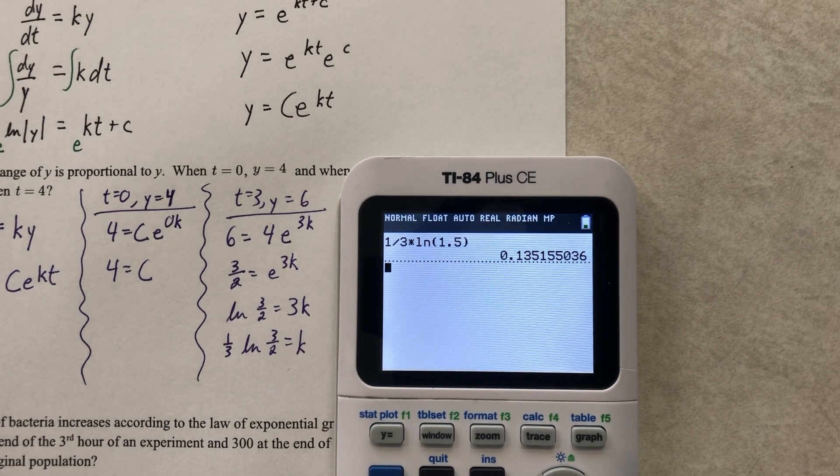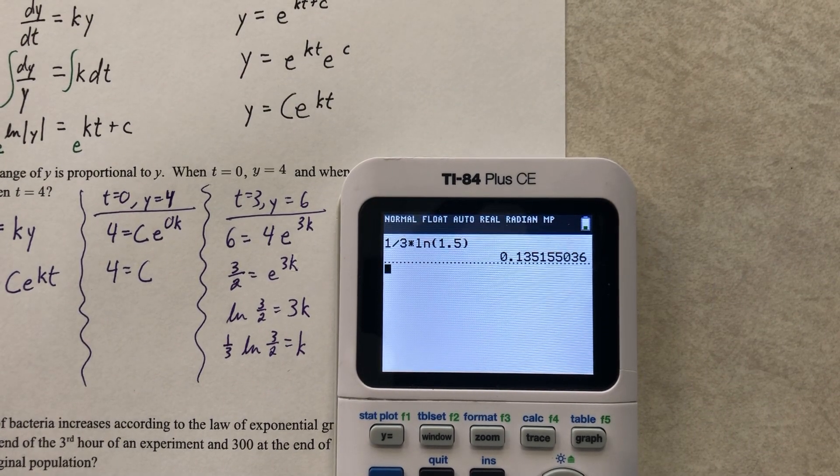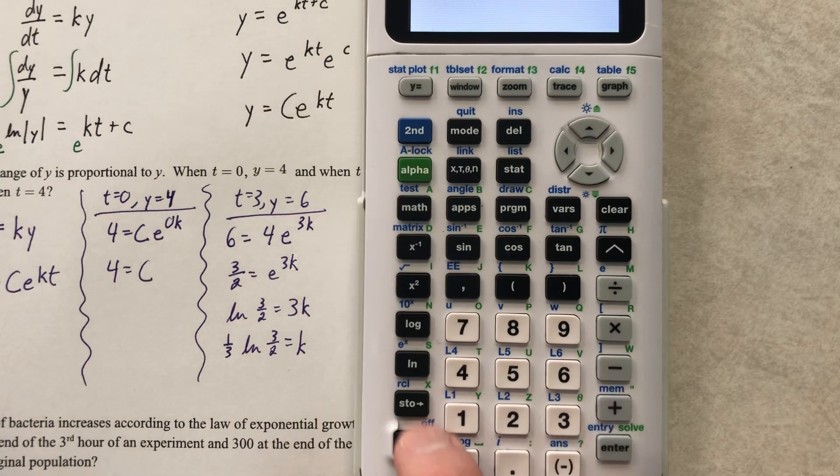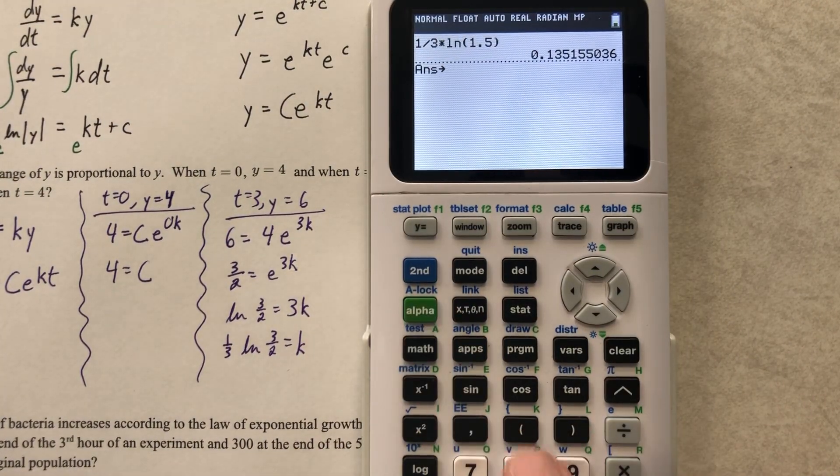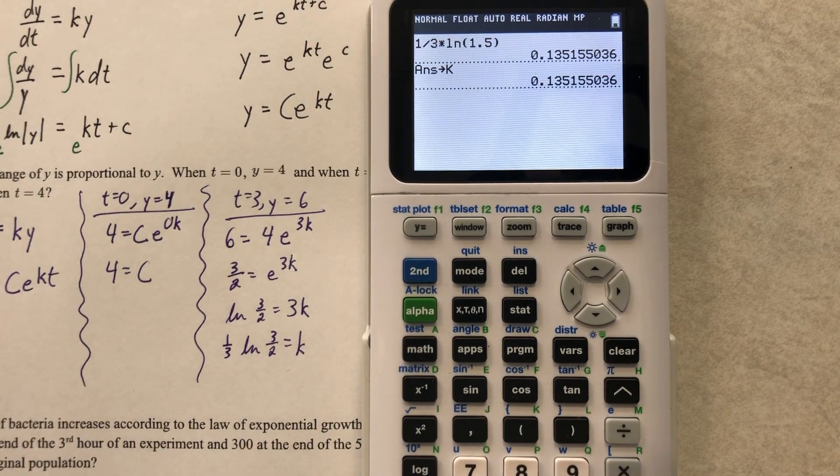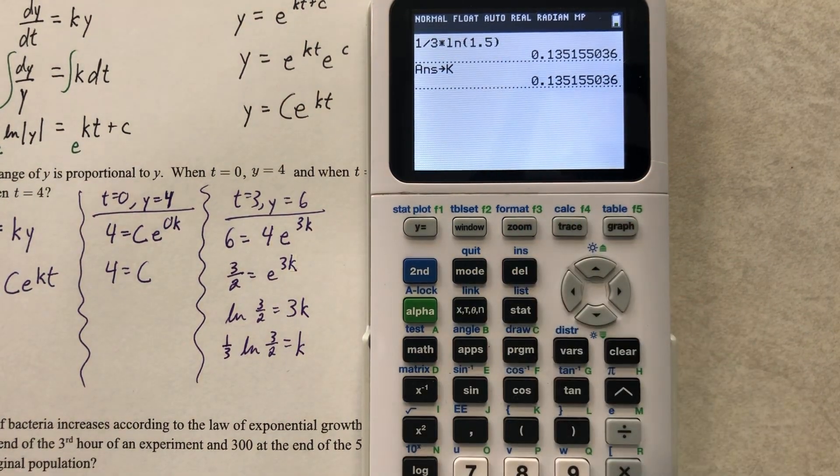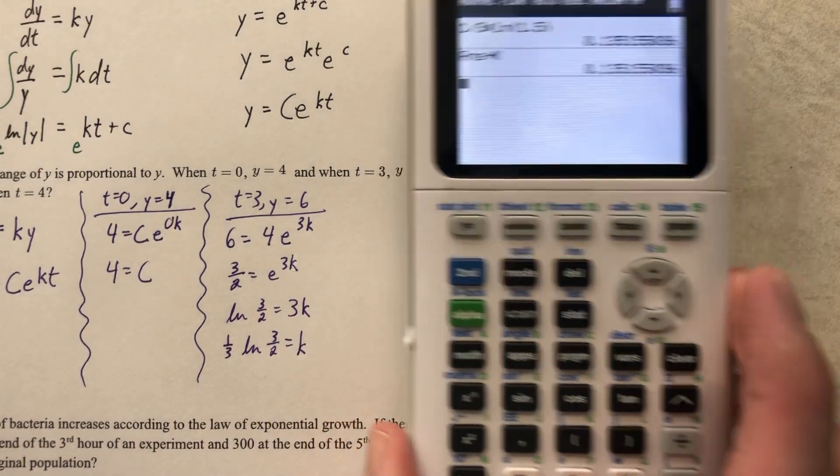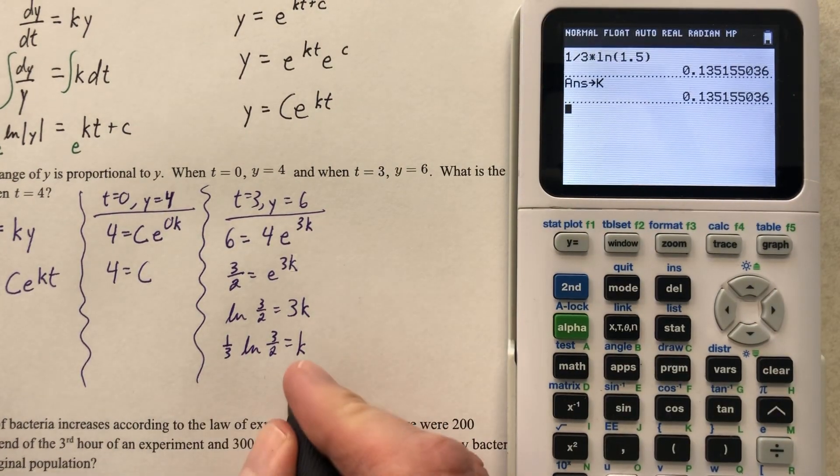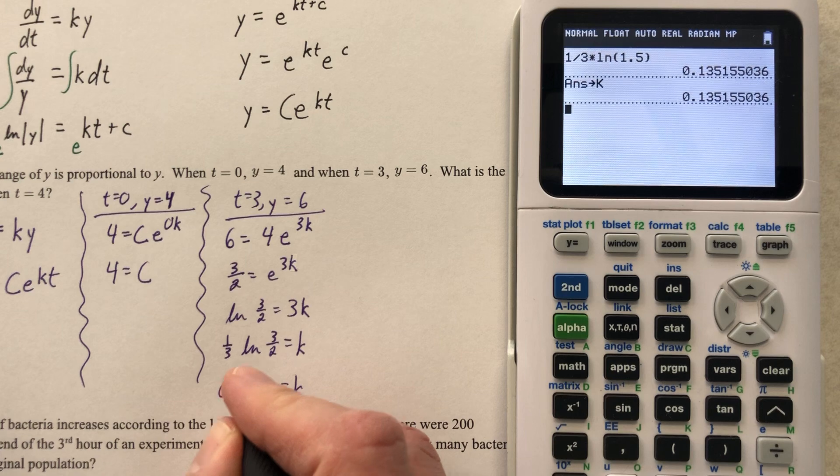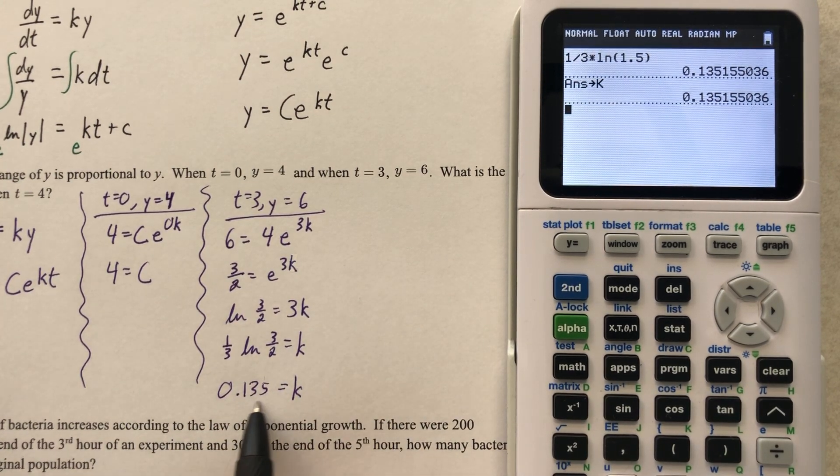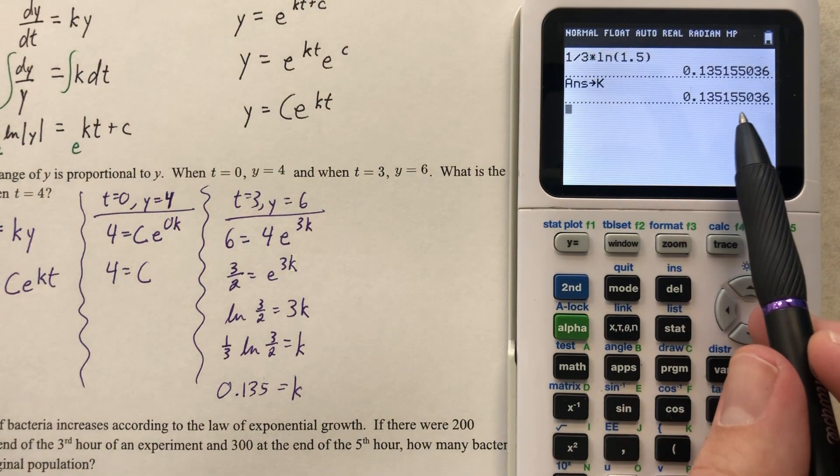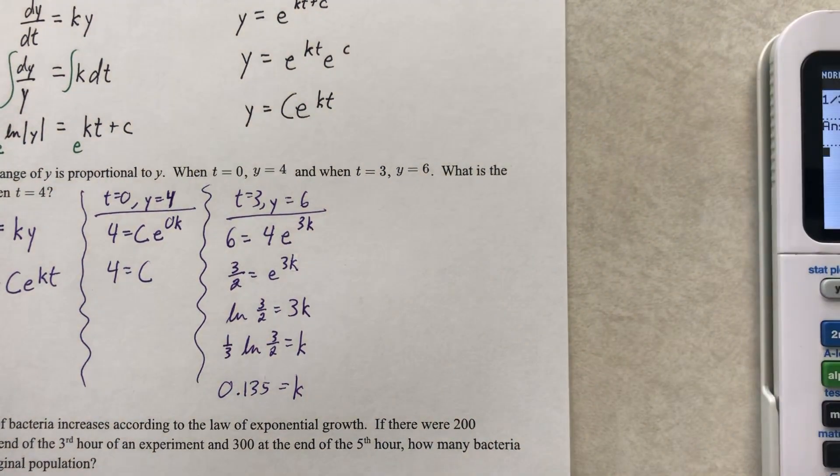For the rest of this problem, I'm going to use that as k. So let's store it. I'm going to press the STO button. Alpha k is going to be k. So now my calculator thinks that this is k. And I will use that, even though I've written it this way. If you want to write the decimal, k equals 0.135, that is fantastic. But don't use this. Use all those decimals. It's stored in your calculator for convenience.